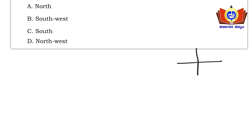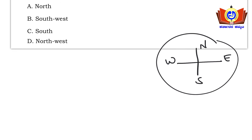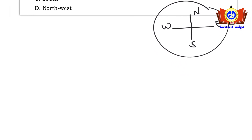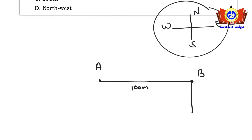Draw the basic direction reference — north, east, west, south. Mark point A as Ranjit's house. He walks 100 meters east to point B. Then turns right — facing south — and walks 50 meters to point C.